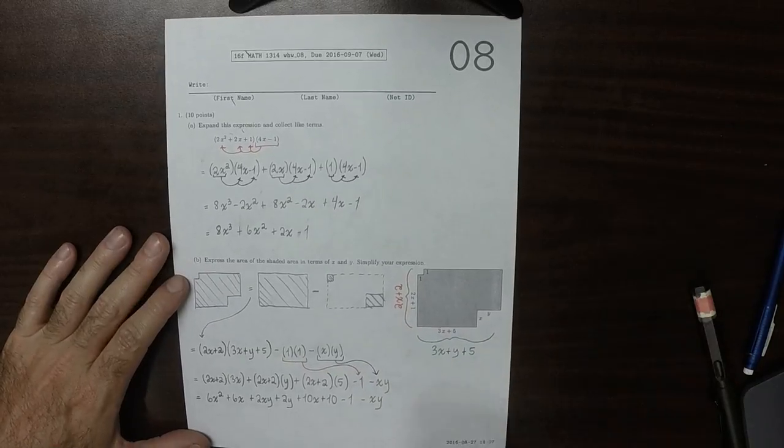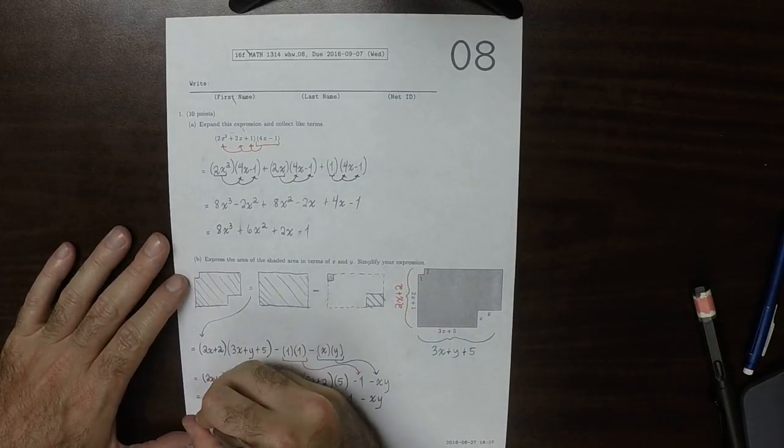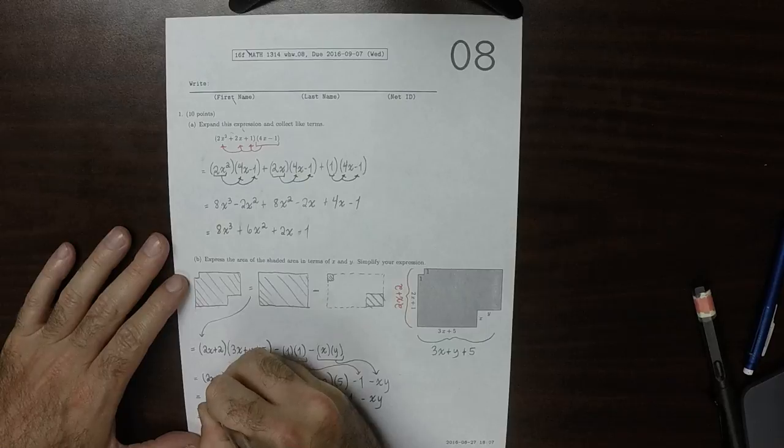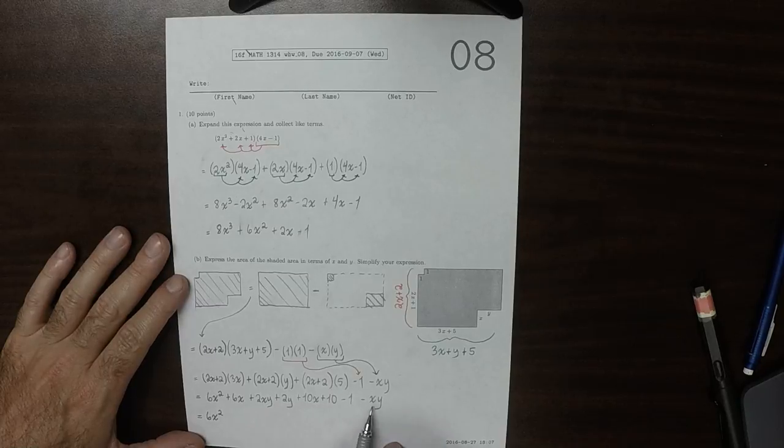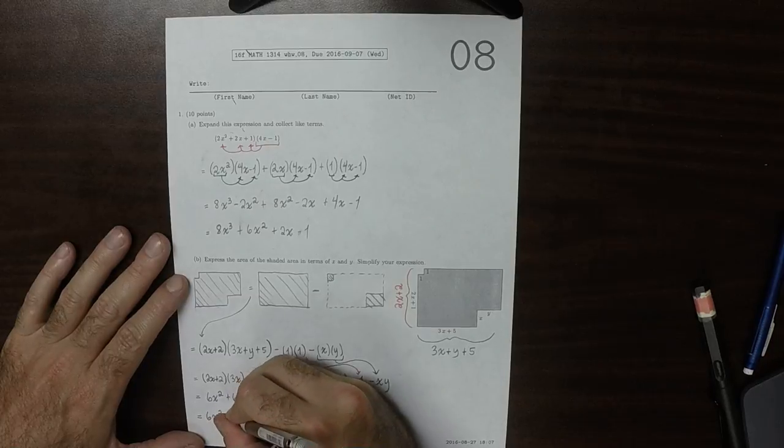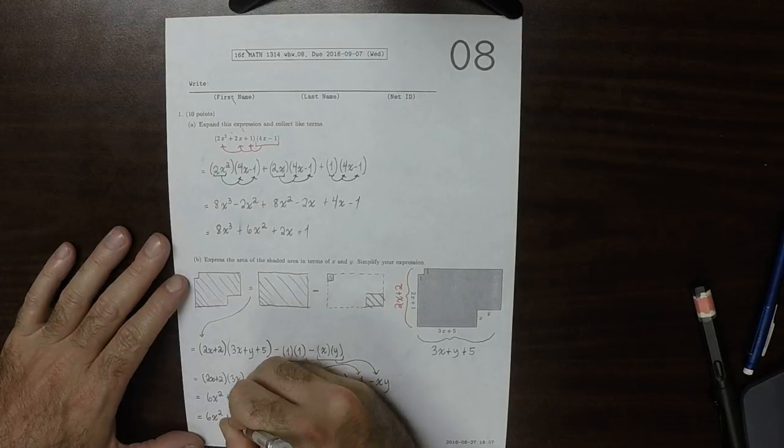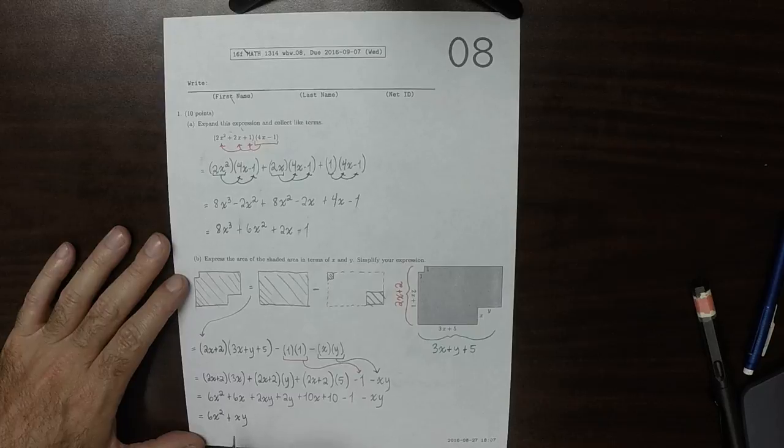So let's collect everything. So 6x squared. That's all the squares. And now I'm going to take everything that has at least two variables in a product. So I'll take the xy's and this xy. So this is 2xy minus 1xy. That would be plus xy.